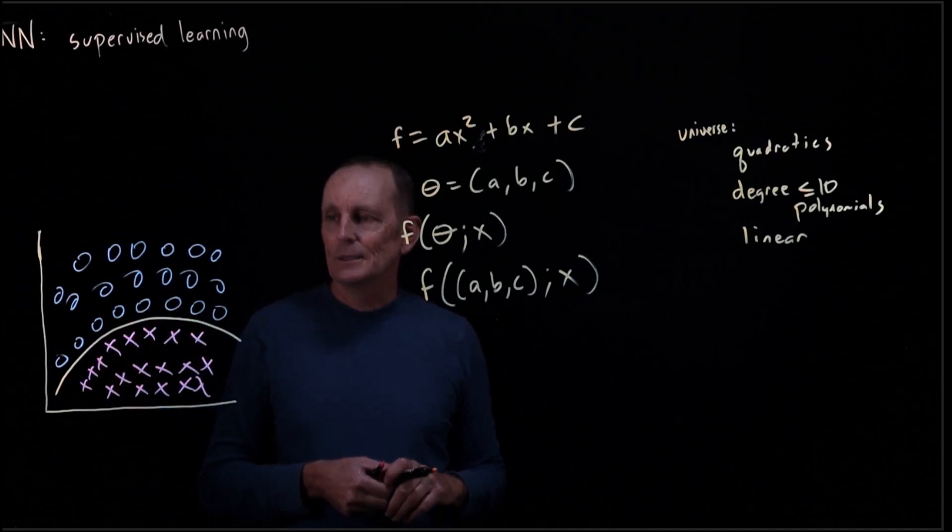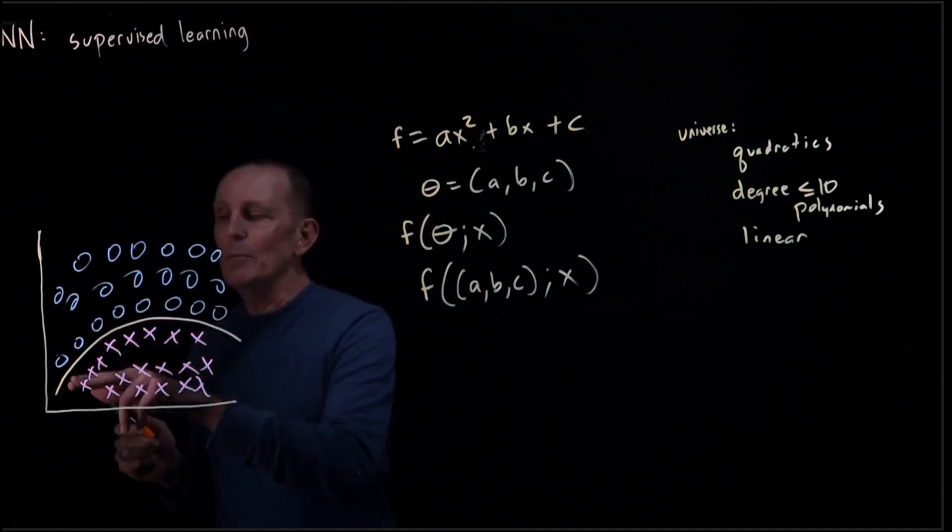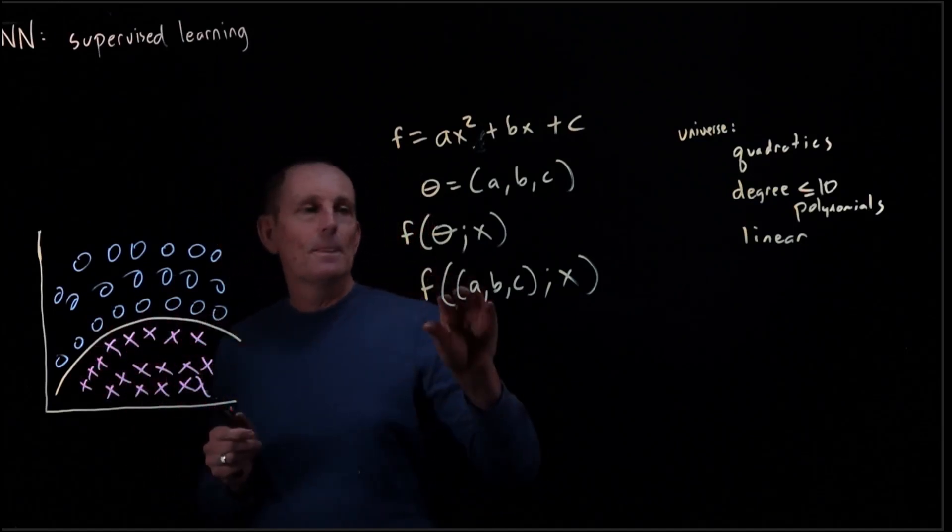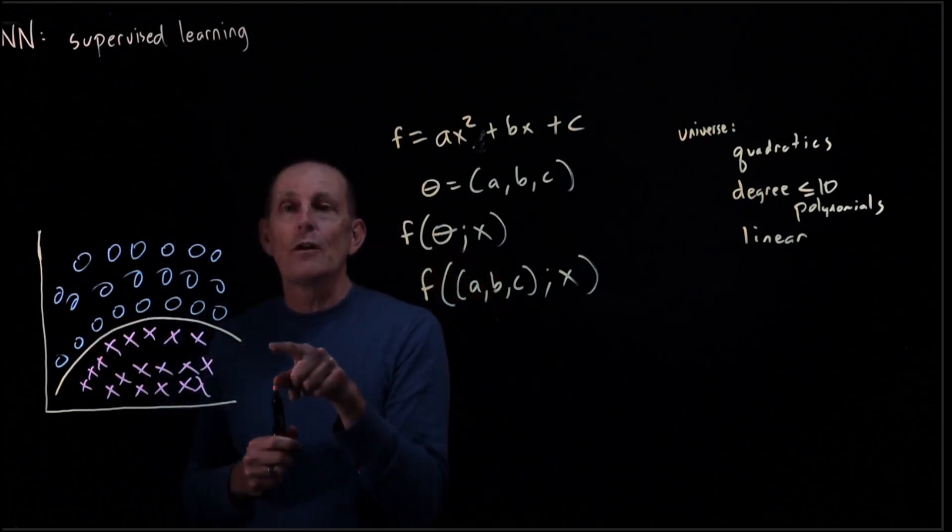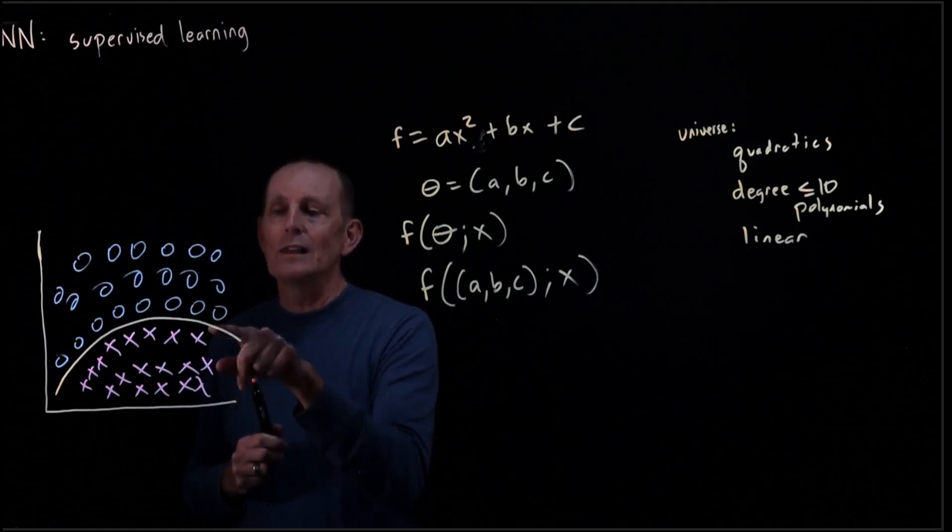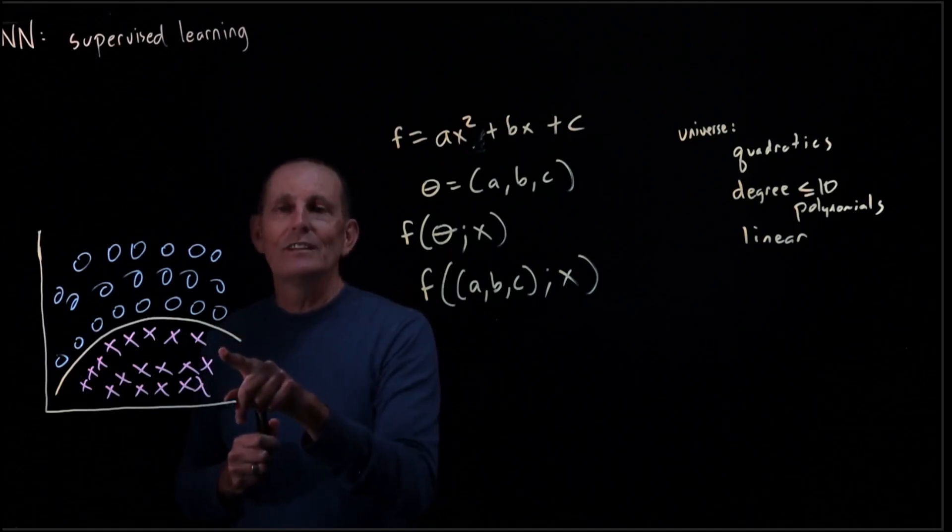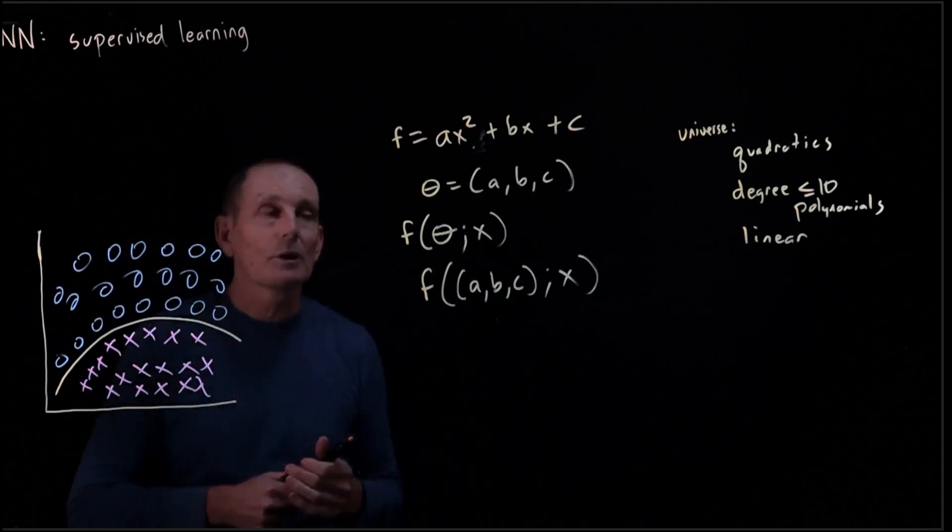The idea is once we've done the training, we come up with this theta, and we can then look at any arbitrary two-dimensional point and say, well, if it's below f, then we're going to say it's an x, and if it's above f, we're going to say it's an o. And according to this data, that would work pretty well.